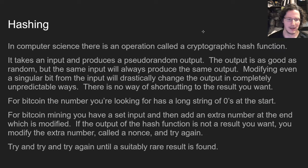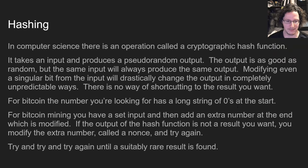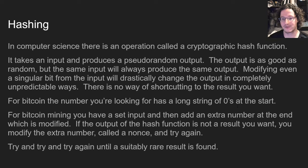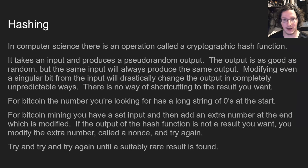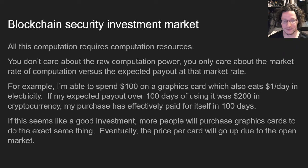For Bitcoin, the number you're looking for has a long string of zeros at the start. For Bitcoin mining, you have a set input and then add an extra number at the end which is modified. If the output of the hash function is not the result you want, you modify that extra number called the nonce and try again — trillions and trillions of times, just unbelievable amounts of times.